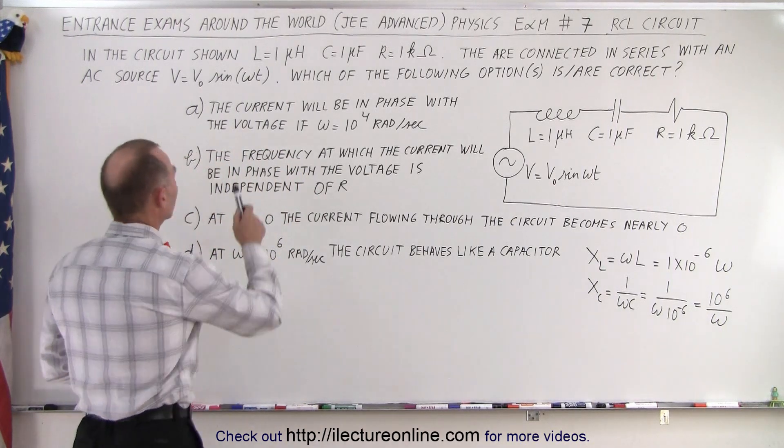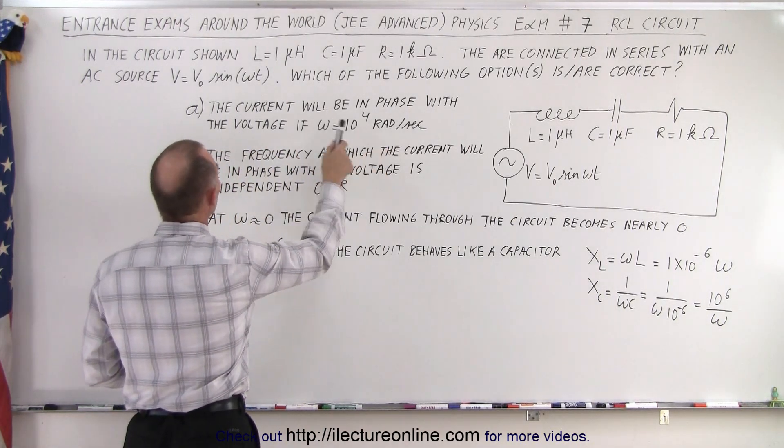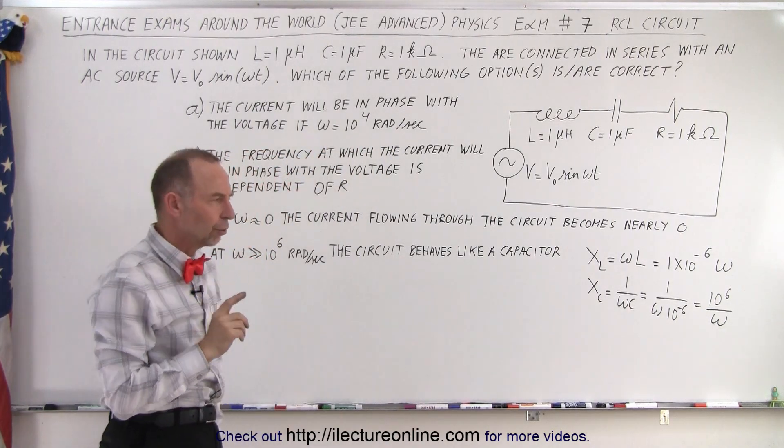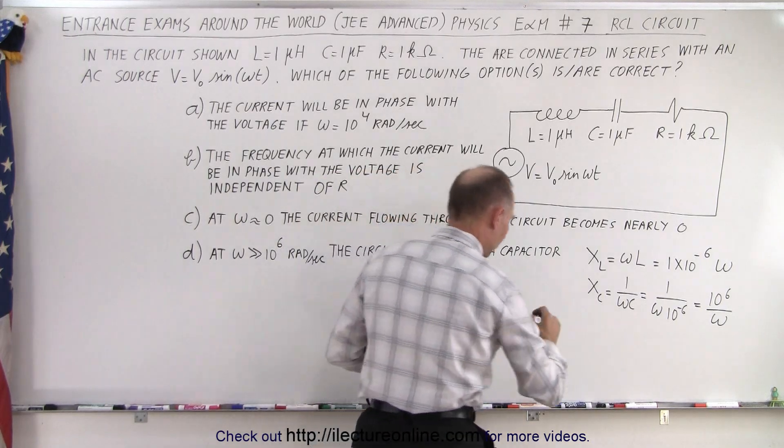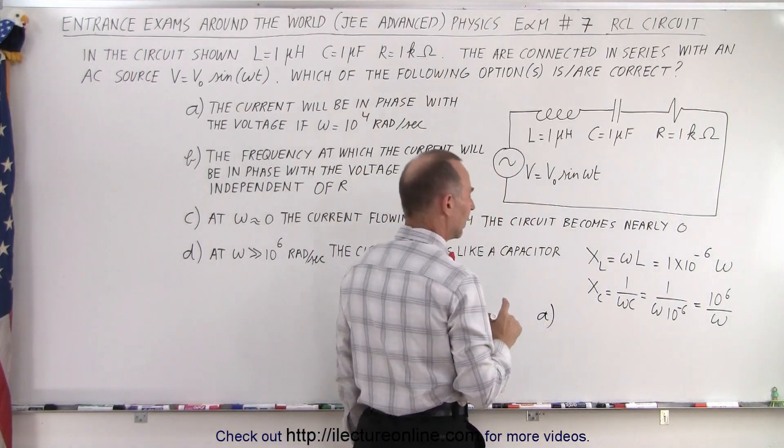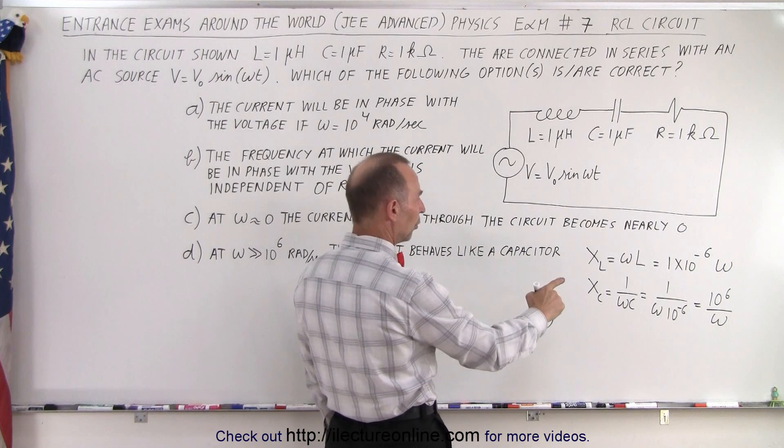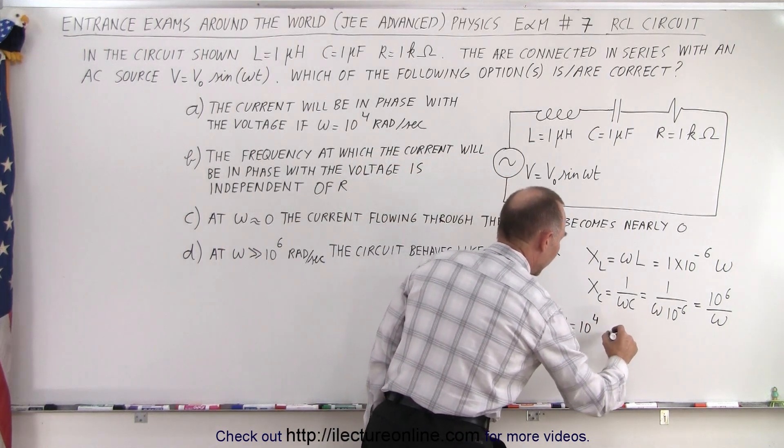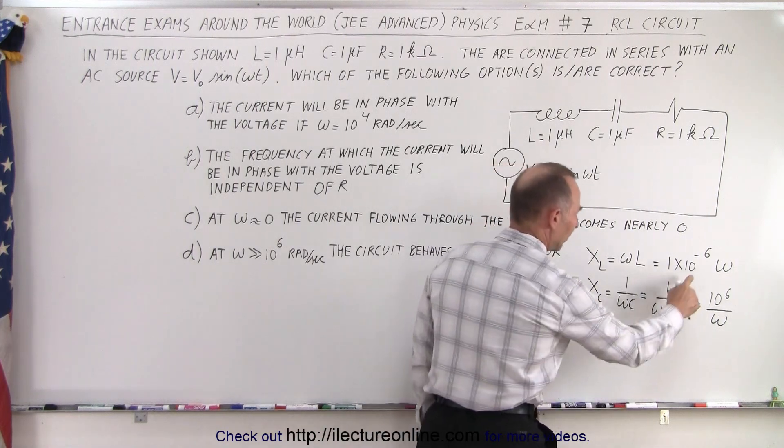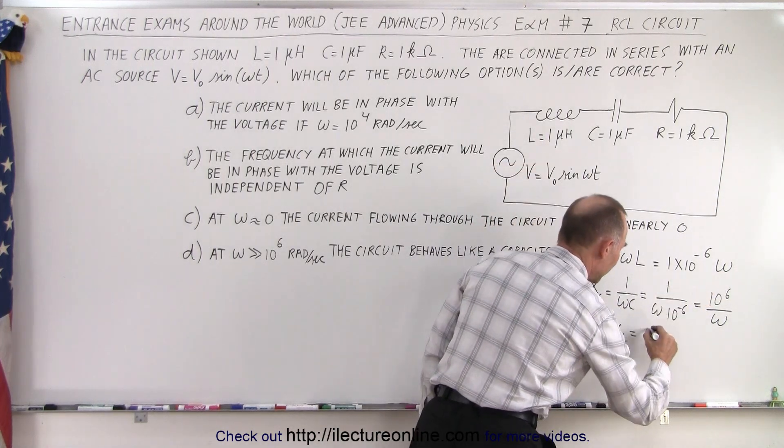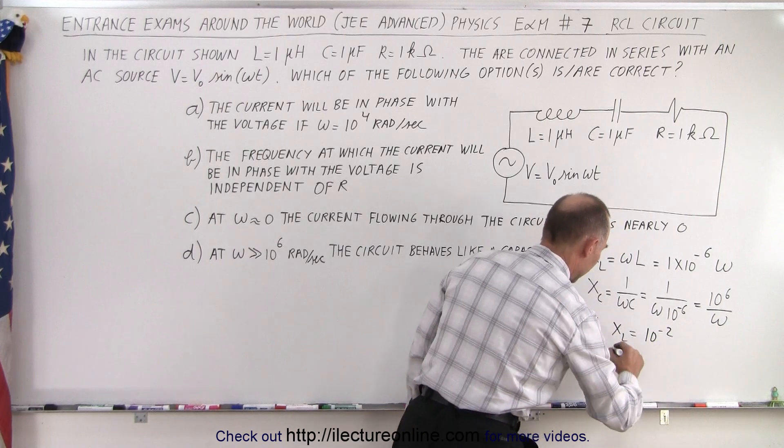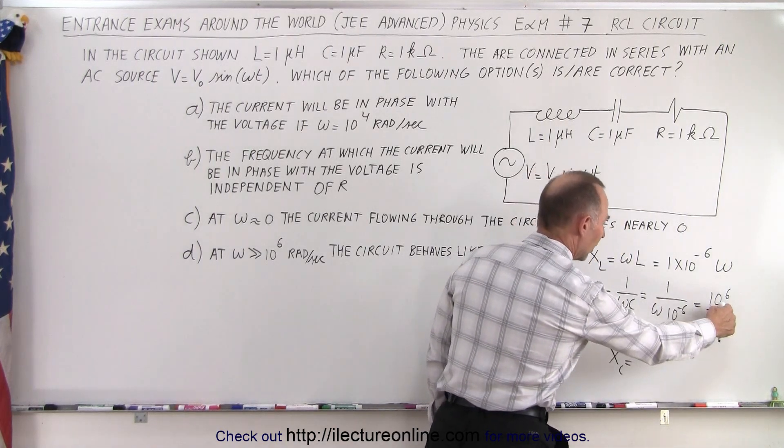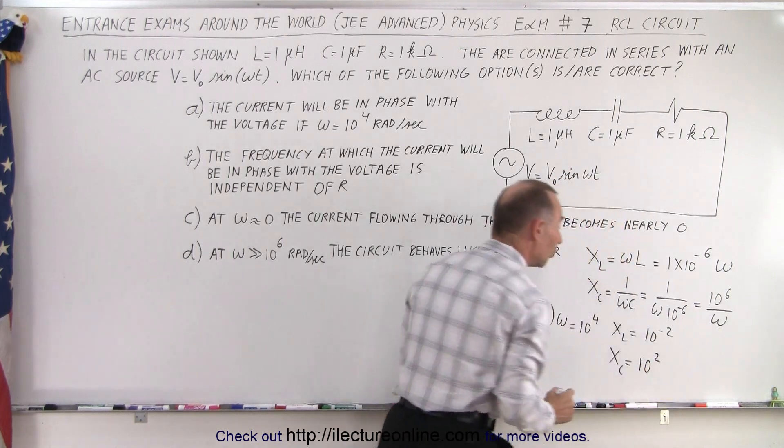Let's read the first statement: The current will be in phase with the voltage if omega is 10^4 radians per second. So for part A, if omega equals 10^4, X_L would be 10^4 times 10^-6, which is 10^-2. And X_C would be 10^6 over 10^4, which is 10^2.